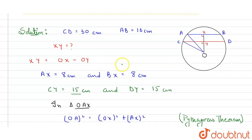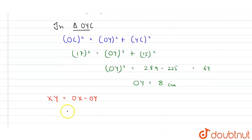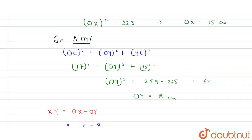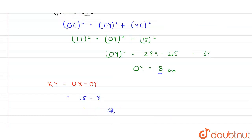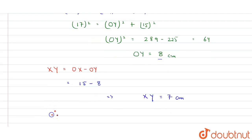Now we have OX equals 15 centimeters and OY equals 8 centimeters. Since XY equals OX minus OY, we get XY equals 15 minus 8 equals 7 centimeters. Therefore, the distance between the chords is 7 centimeters.